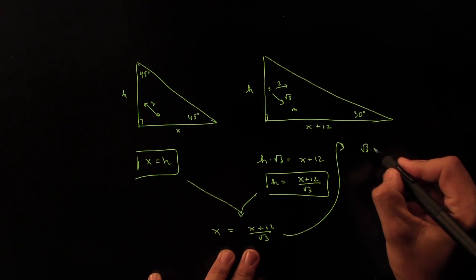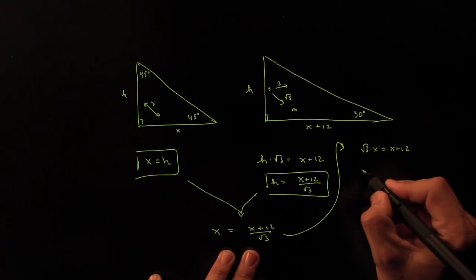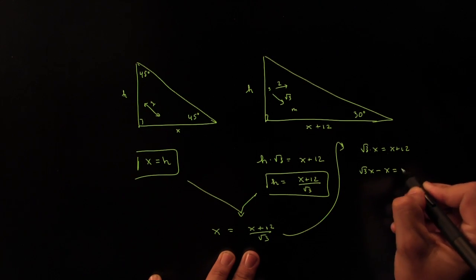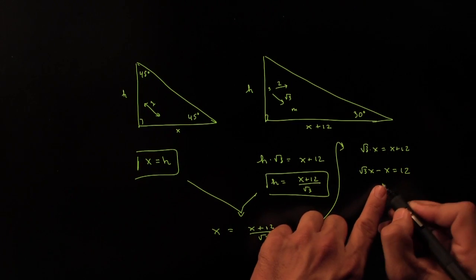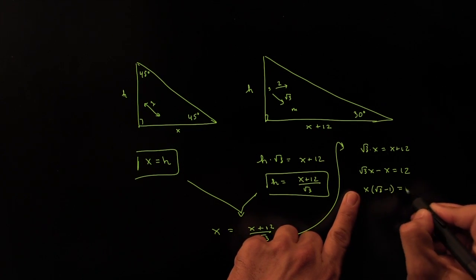Square root of 3 times X is equal to X plus 12. That's multiplying both sides by the square root of 3. Square root of 3 times X minus X is equal to 12. That's moving all the X's to one side. I'll factor out an X. That's the square root of 3 minus 1. And that's equal to 12.